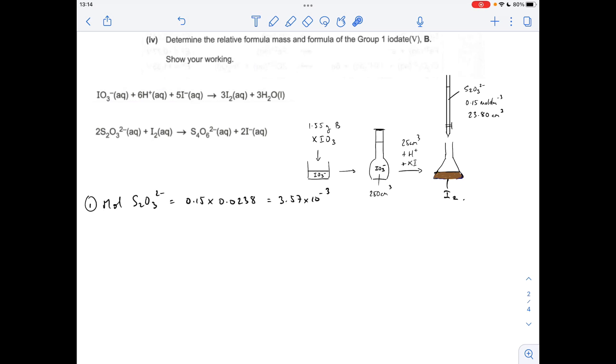The first thing we do is work out the moles of thiosulfate ions used in the titration: concentration times volume in decimeters cubed. That gives us that many moles of thiosulfate. This is the titration reaction, so the moles of iodine that must have been present will be half of that, giving 1.785 × 10⁻³.